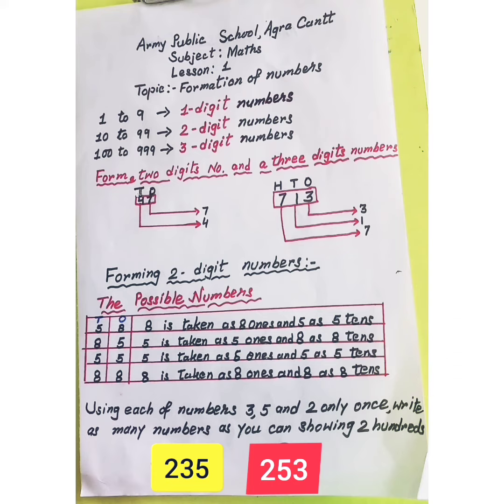Can you tell me, children, if we use the digits 3, 5, and 2 only once, how many numbers will show two hundreds? Here we have to take 2 as hundreds, and we cannot repeat the digits.